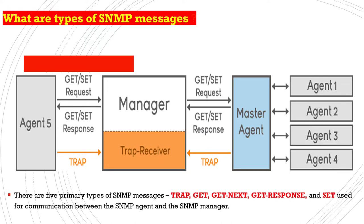There are five primary types of SNMP messages. First is Trap, then Get Request, then Get Next Request, then Get Response, and finally Set. These message types are used by the SNMP agent and SNMP manager to communicate.